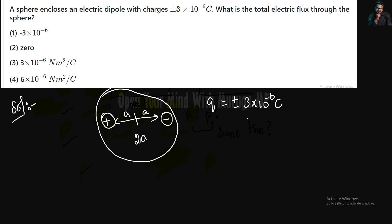In a closed surface, we will talk about the electric flux. We will use Gauss's law. A closed surface means encloses. A sphere encloses an electric dipole. In a closed surface, we will talk about the electric flux. What is the electric flux? It is Q enclosed divided by epsilon₀.